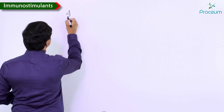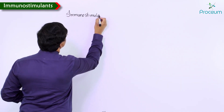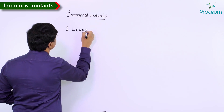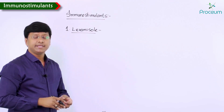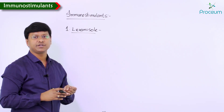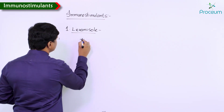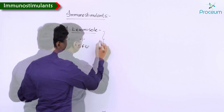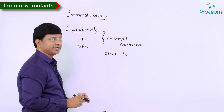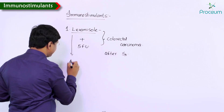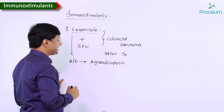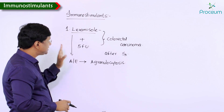Let me discuss the other group of drugs called immunostimulants. The first example is levamisole. This particular levamisole is used along with 5-fluorouracil for the treatment of colorectal carcinoma after surgery. The major adverse effect of levamisole is agranulocytosis.